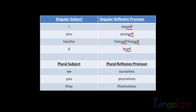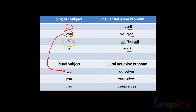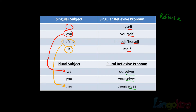Now let's look at the reflexive pronouns for plural subjects: we, you, and they. We includes you and I as a subject. The reflexive pronoun for we is ourselves. For you, it's yourselves. And for they — which would be talking about he, she, or it — the plural reflexive pronoun is themselves. To make the plural reflexive pronoun, the spelling in all of these ends in selves: S-E-L-V-E-S.